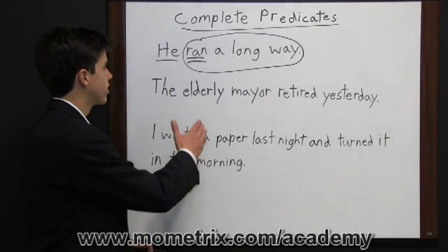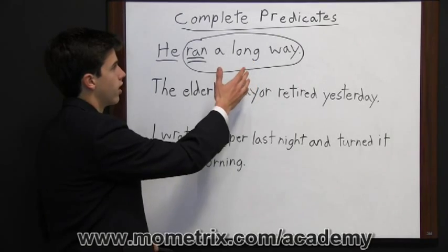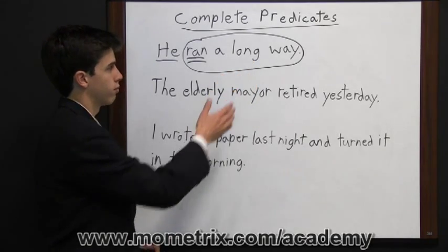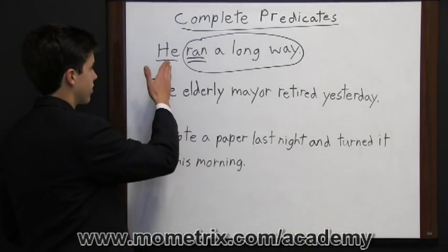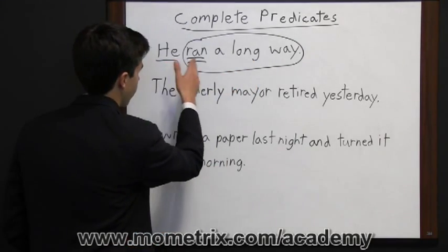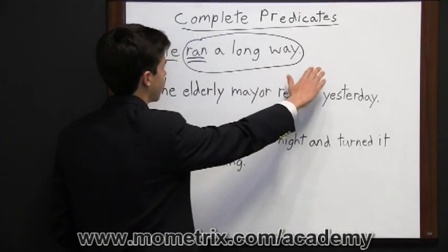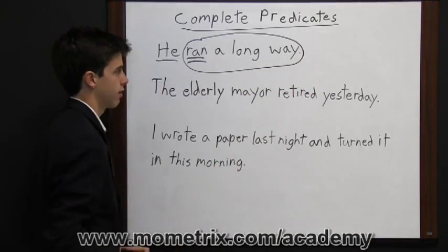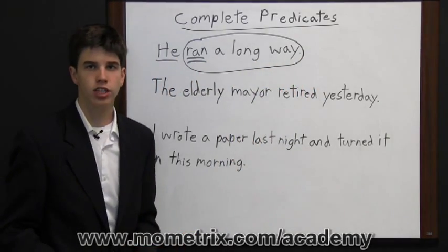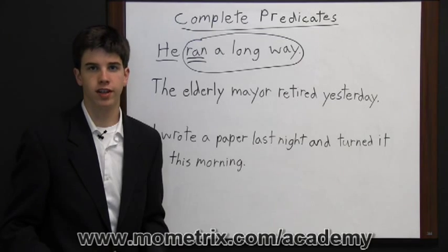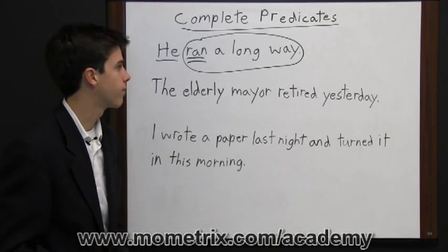Generally, all the words that come after the verb are going to be part of the predicate. The subject comes first, then the verb, and all the words past the verb are going to be part of the predicate. That's not always true, but generally you can determine the predicate that way.